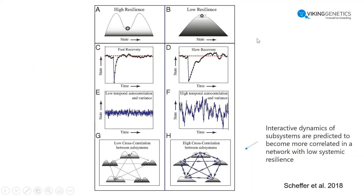We found the Schöpfer et al. 2018 study, which illustrated with some nice pictures what is high resilience and what is low resilience. To the left you can see high resilience. If you look at figure A, you can see that little ball as an animal — that animal is harder to interrupt compared to B, which more easily falls off the cliff. Looking at resilience over time in C and D, you want the animal to recover quickly, so C recovered faster than D. In E and F, you want little variation, for example over the lactation curve. And in G and H, it illustrates the correlations between different subsystems — if there is high correlation, like in H, between subsystems, then there is low systematic resilience.